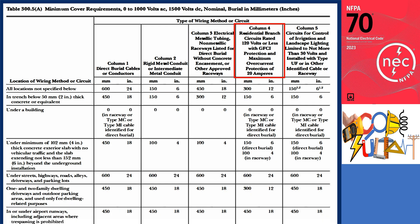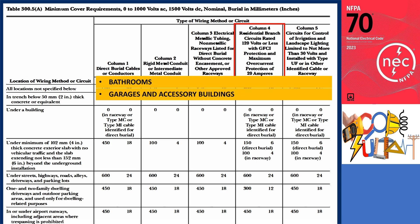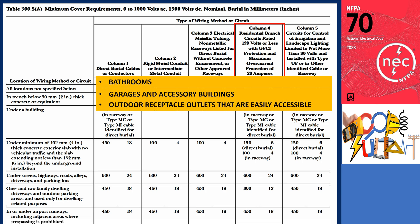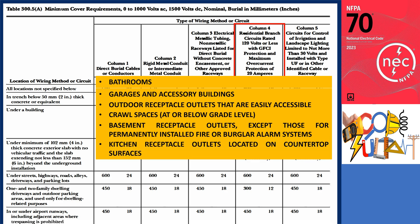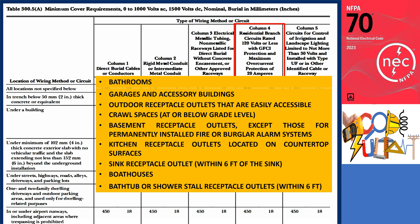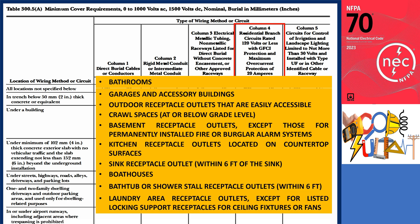Column 4 is designated for residential branch circuits rated at 120 volts or less, equipped with GFCI protection and a maximum overcurrent protection of 20 amperes. Examples include bathroom receptacle outlet wirings, garages and accessory building receptacle outlet wirings, outdoor receptacle outlet wirings that are easily accessible, crawl space receptacle outlets at or below grade level, basement receptacle outlet wirings (except those for permanently installed fire or burglar alarm systems), kitchen receptacle outlets on countertop surfaces, sink receptacle outlet wirings within 6 feet of the sink, boathouses wirings, bathtub or shower stall receptacle outlet wirings within 6 feet, laundry area receptacle outlet wirings, indoor damp and wet location receptacle outlets, and any residential branch circuits rated 120 volts or less with GFCI protection and maximum overcurrent protection of 20 amperes.